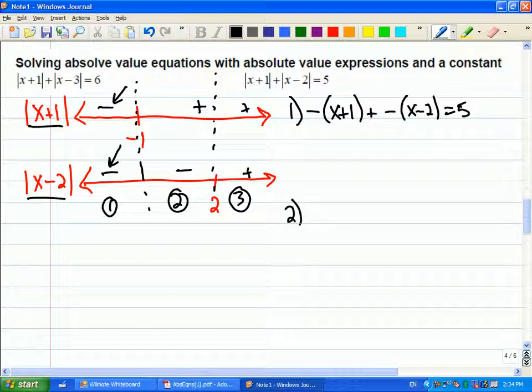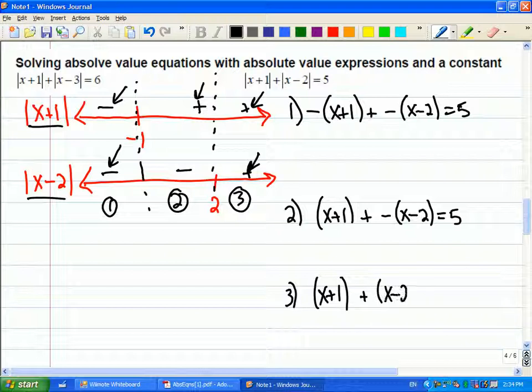The second equation that I'm going to get is when this one will be positive, so it'll just be x plus 1. And this one will be negative, so it'll be plus negative x minus 2. And then finally, this one when they're both positive. So positive and positive. So these are my three equations.